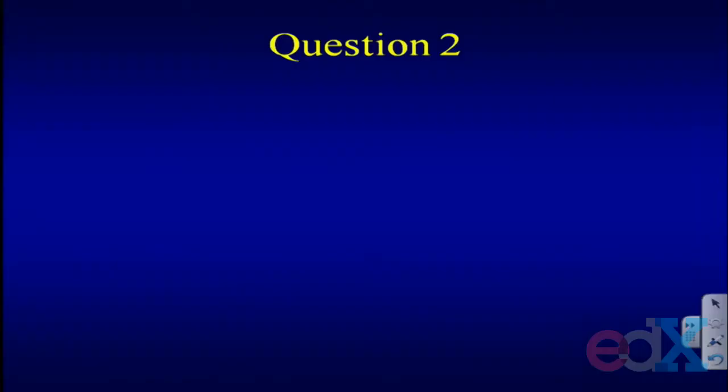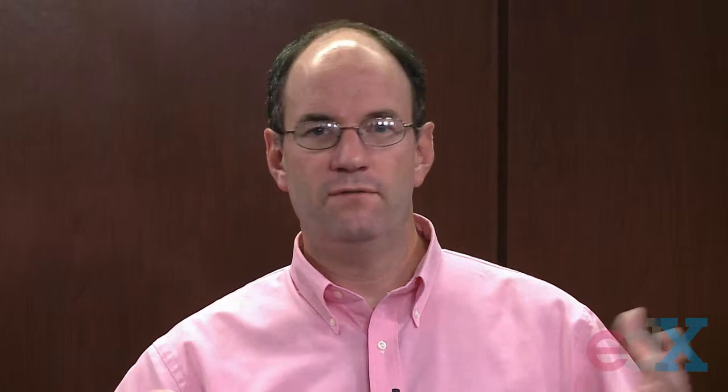Question two: alcohol was assessed with a food frequency questionnaire asking participants to report their average consumption over the last year. What are the advantages or disadvantages of using this tool to study diabetes onset? A food frequency questionnaire does not ask what you ate yesterday — no one's diet on any single day is fully representative. We've done a lot of work to assess what it means to ask about diet over the last year. For alcohol specifically, the 60 to 70 percent of men who drink don't drink the same amount every day — there are seasonal differences. What would you need to be convinced this is a good tool?